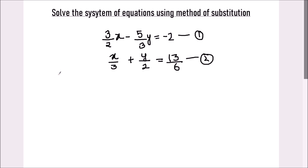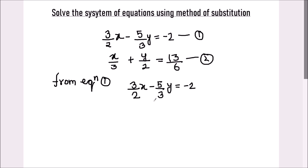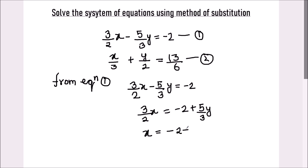So here, from equation 1, let's find the value of x. We are going to leave 3 by 2x on the left hand side and move all the other terms to the right hand side. So that's minus 2 plus 5 upon 3y. This negative 5 by 3y will become positive 5 by 3y. We will have x equals minus of 2 plus 5 upon 3y, all times 2 upon 3.